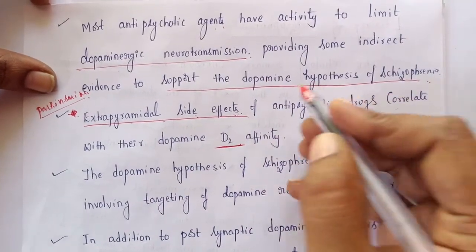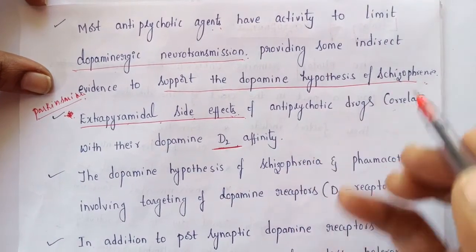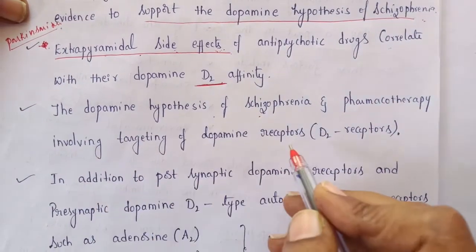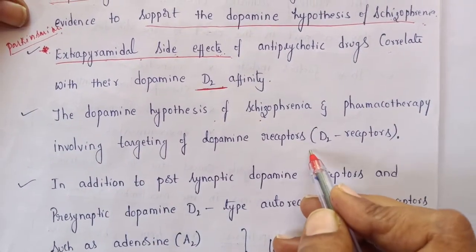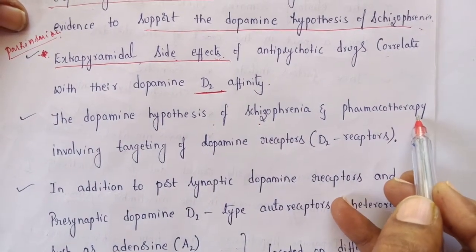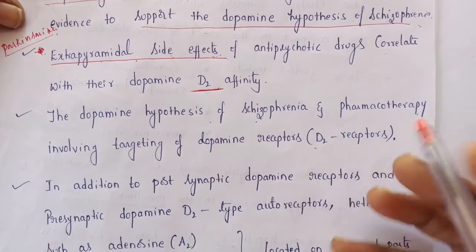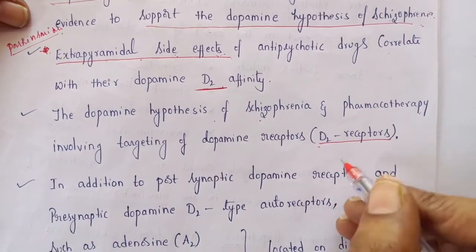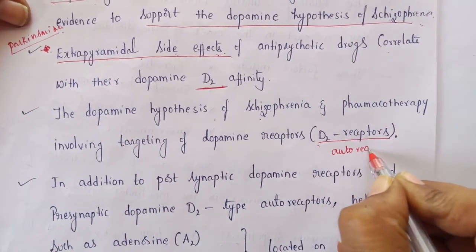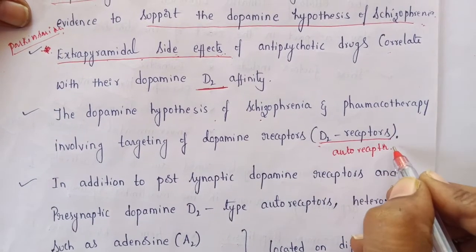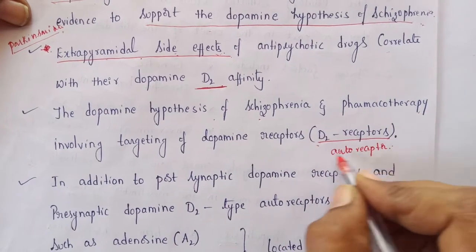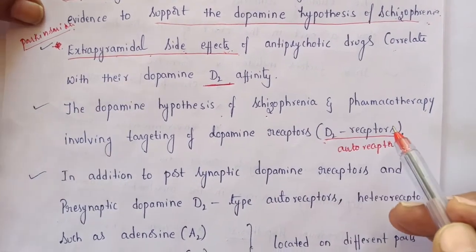Based on the dopamine hypothesis, pharmacotherapy for schizophrenia involves targeting dopamine receptors, especially D2 receptors. The D2 receptor is located on presynaptic dopaminergic neurons and regulates the synthesis of dopamine, which is why targeting D2 receptors is central to antipsychotic treatment.